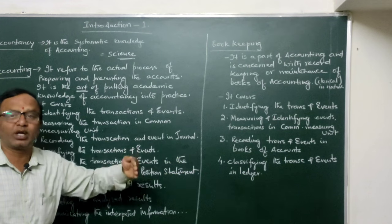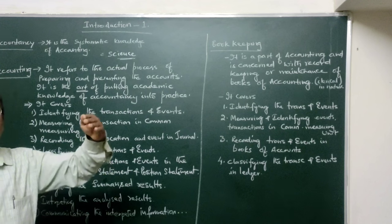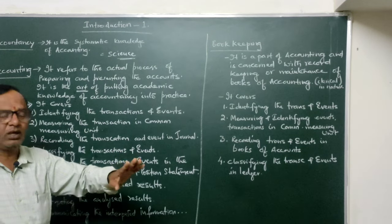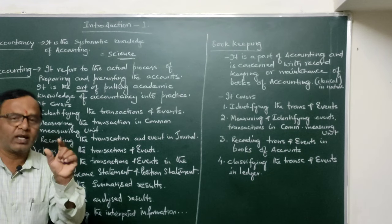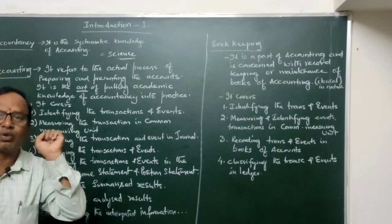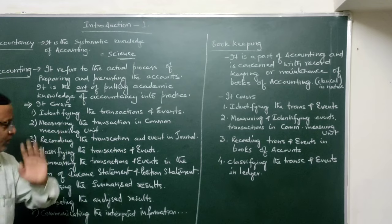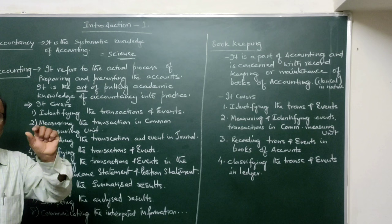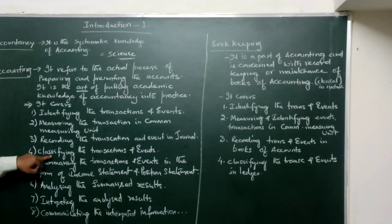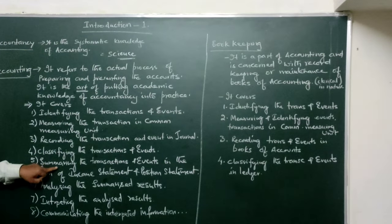Classifying means segregating transactions or grouping transactions of similar type at one particular place. In accounting books, after the journal, the next book is the ledger — the book of secondary entry wherein different accounts relating to the business are maintained. In the ledger, each particular account groups transactions of similar type, such as expenses, incomes, and assets. So classifying transactions is done by recording in the ledger accounts.